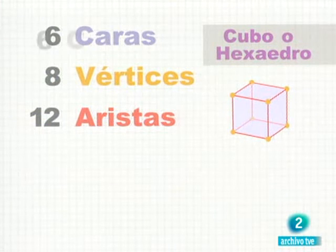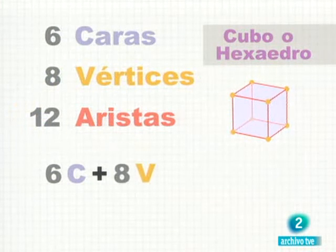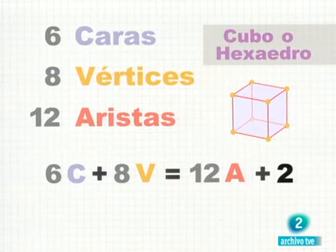Si sumamos el número de caras más el de vértices, seis más ocho, obtenemos catorce. Dos más que el número de aristas.